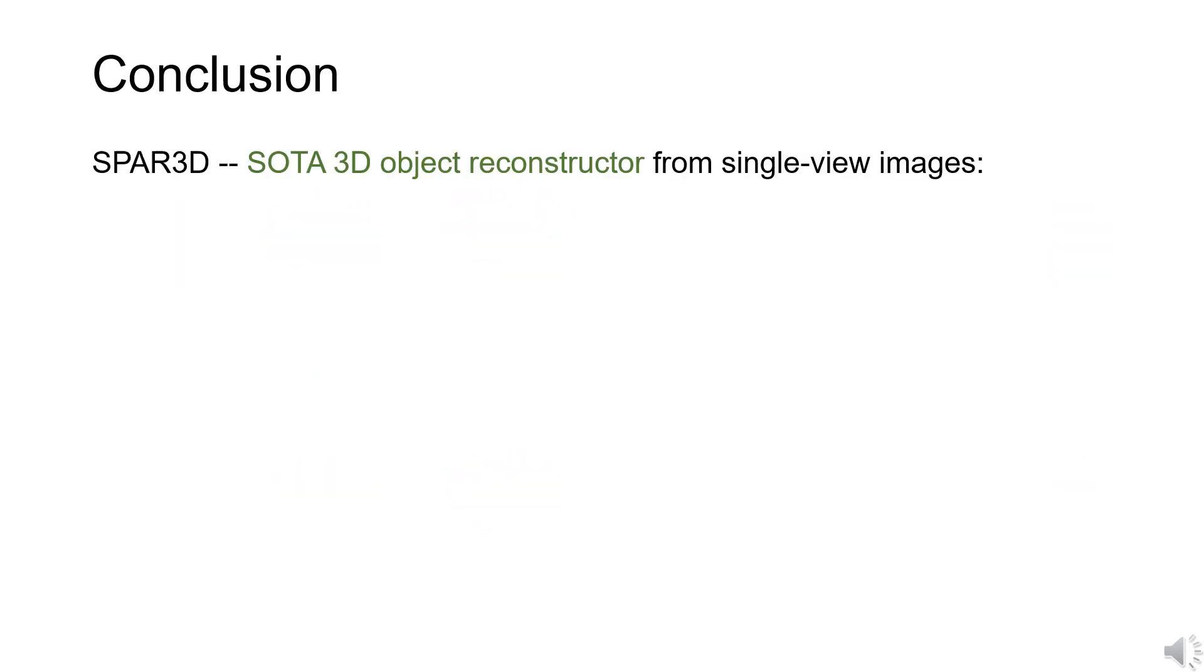We present SPAR3D, a simple yet effective approach for single-view 3D reconstruction. The core of our model is a two-stage design which incorporates the strengths of regression-based and diffusion-based methods. This enables SPAR3D to significantly outperform previous state-of-the-art methods with fast inference speed.